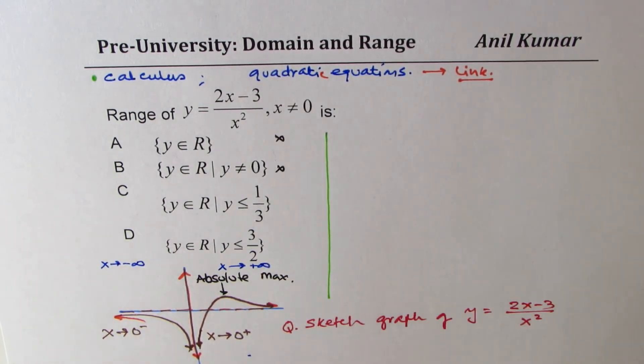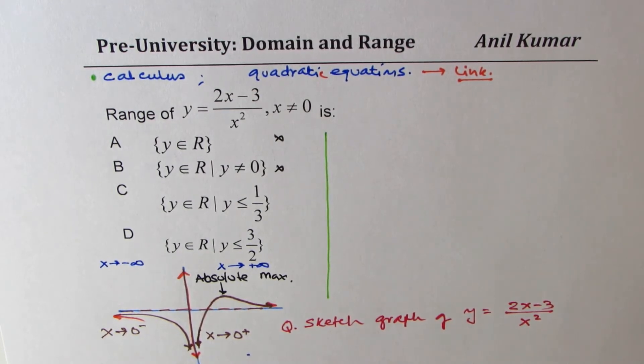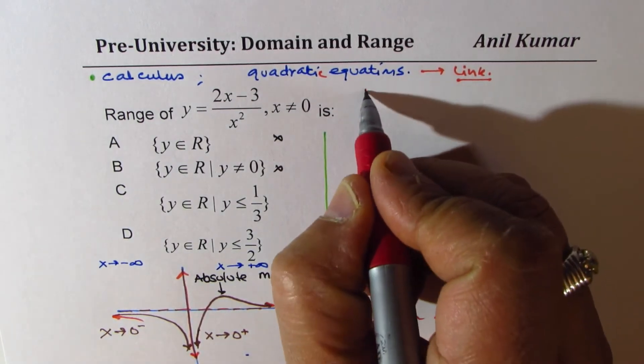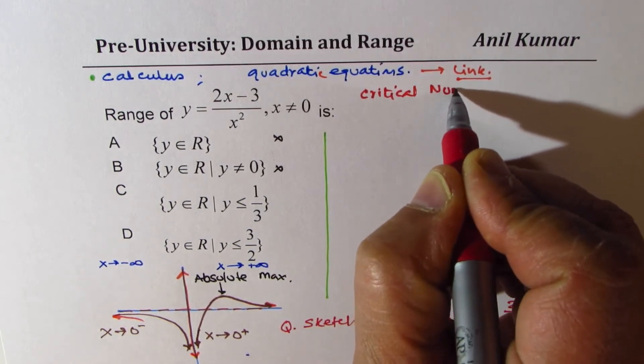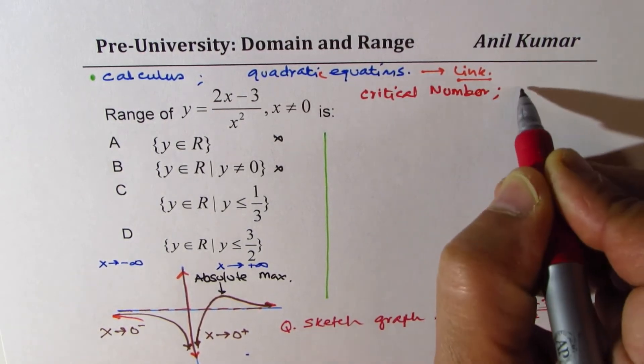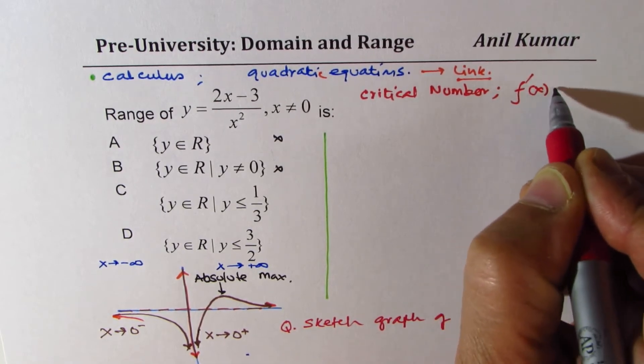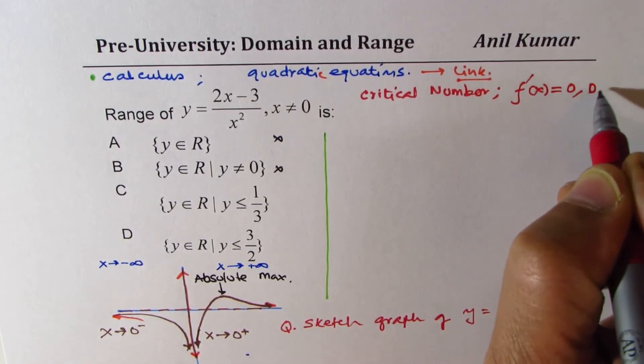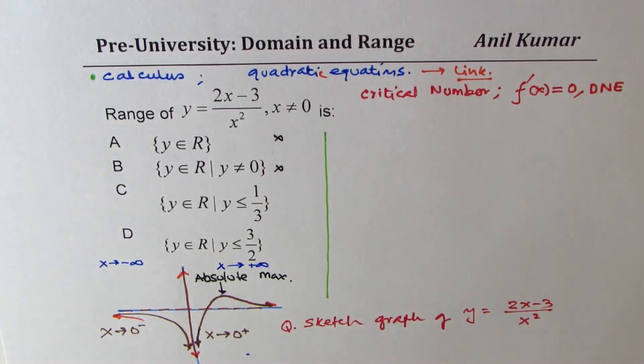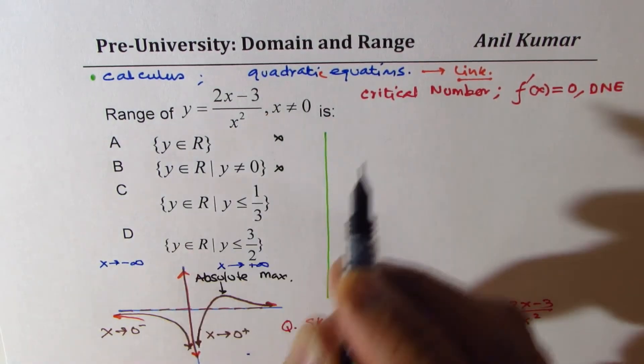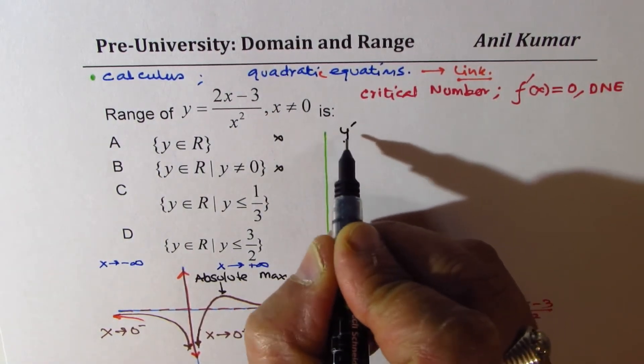What we are going to do is use calculus, first derivative. So we will try to find the critical number. That is, the derivative is either equal to 0 or does not exist. And by analyzing the critical number, we will find absolute maximum. So y is given to us. What is the derivative?